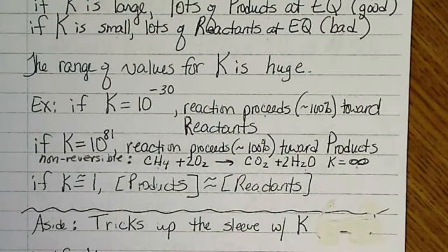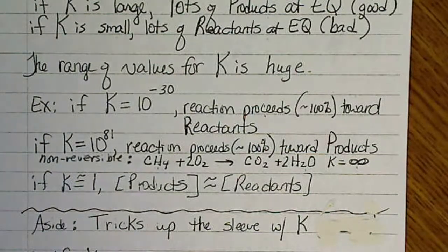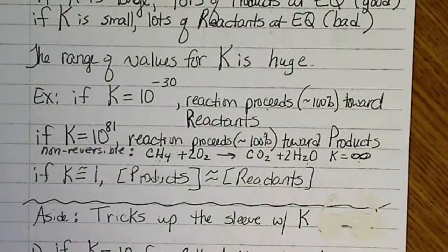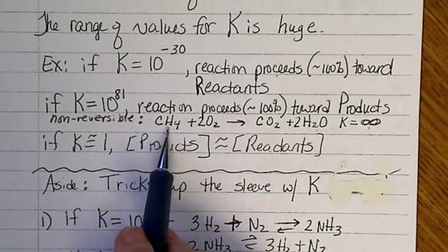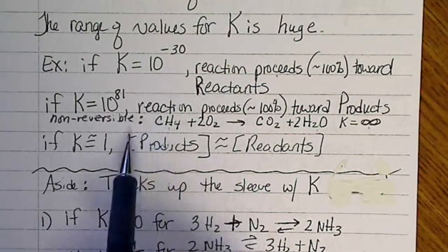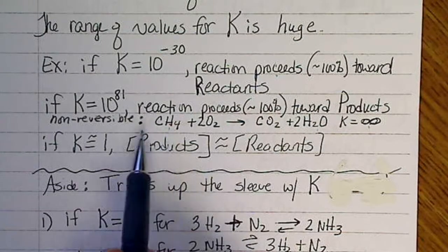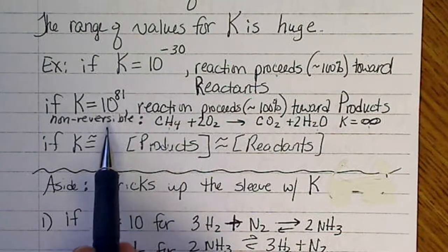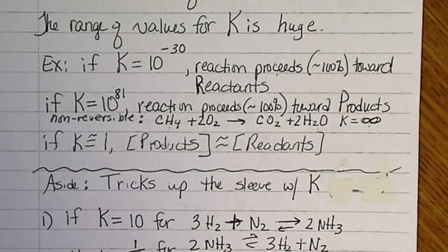There's not going to be a K value that looks typical because the range for K can be so varied. As a reminder, equilibrium only makes sense when we're talking about a reversible reaction.